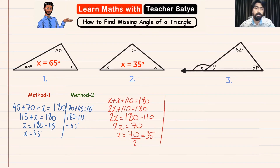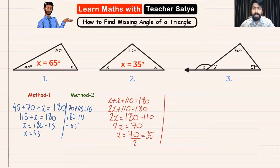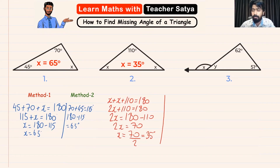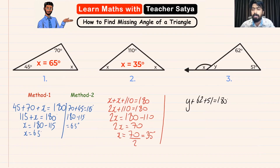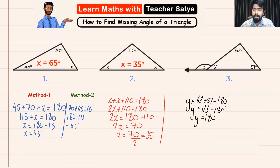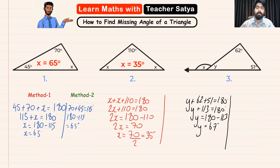Now let us go to question number 3. In question number 3, as you see here, we have to find the value of y and the value of x — there are two variables. We can straight away find the value of y using the triangle properties. Y is one of the angles from the triangle and the remaining two are 62 and 51. So: y plus 62 plus 51 is equal to 180 degrees. Y plus 113 is equal to 180 degrees. Y is equal to 180 minus 113, and the value of y is equal to 67 degrees.